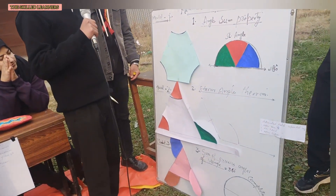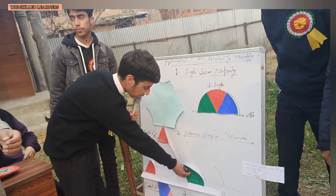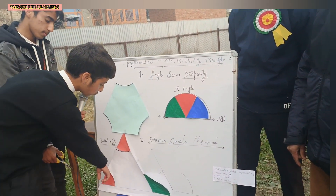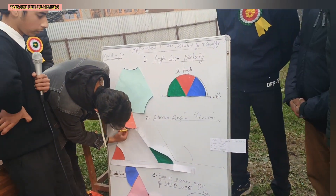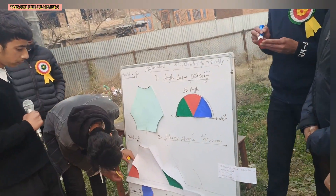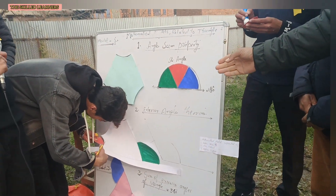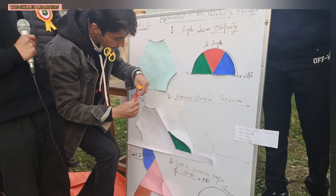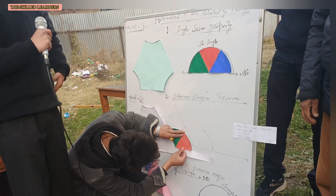Our next model is about the exterior angle theorem, which states that when the side of a triangle is extended, it makes an exterior angle. The exterior angle is equal to the sum of the two interior opposite angles. When we cut these two interior opposite angles and combine them, they equal the exterior angle. These are the two interior opposite angles, and this is the exterior angle.